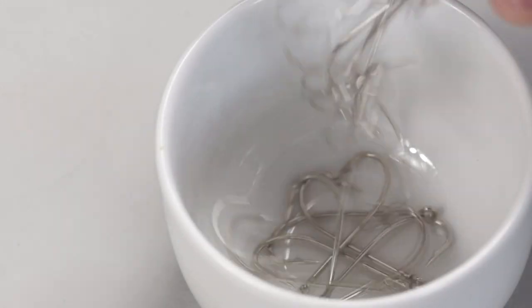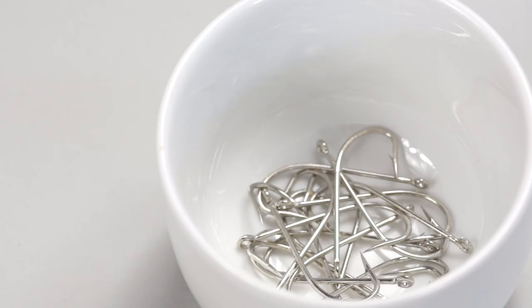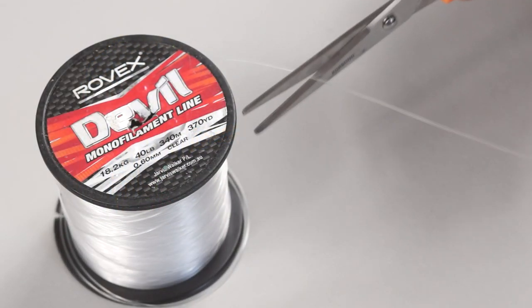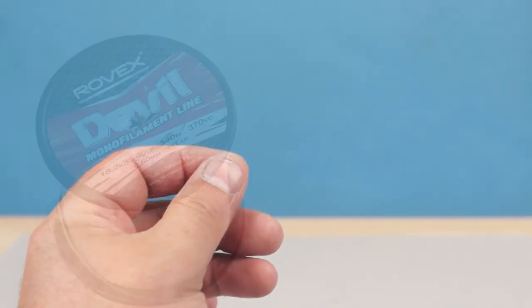For hooks I'm using 2/0 nickel plated O'Shaughnessys. And to tie them a 40 pound monofilament cut into 9 inch lengths to make the lures and snoods.